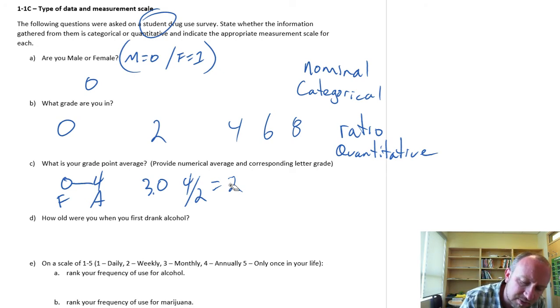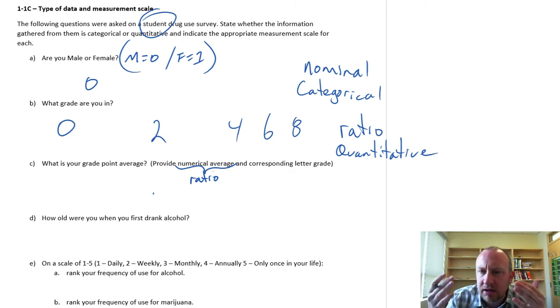So the first part, if we look at the numerical average, this numerical average here, this is going to be a ratio because it meets all of the criteria of a ratio and so it's going to be quantitative.